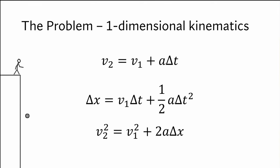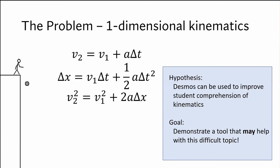Here's the problem we're addressing. Just to get a sense of the student's perspective: looking at the algebra can be quite intimidating, especially in only their third or fourth week at university. Some students may not have been exposed to physics before, and you need physics to get into engineering — which may be why they're here. In one dimension we look at up/down or left/right, then extend to two dimensions. The hypothesis is that Desmos can be used to improve student comprehension of kinematics.